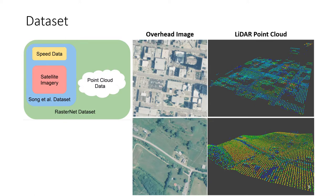We constructed a large-scale free flow speed dataset over the state of Kentucky, extending the existing Song et al. satellite image dataset by including 3D point clouds extracted from airborne LiDAR. The speed labels were provided by the Kentucky Transportation Center, the satellite imagery by the National Agricultural Imagery Program, and the LiDAR data from the KY From Above program. Each free flow speed label is associated with the corresponding road shown at the center of an overhead image and a LiDAR point cloud. We illustrate two example roads — an urban road on the top row and a rural road on the bottom row — both depicted in a satellite image and as a point cloud.